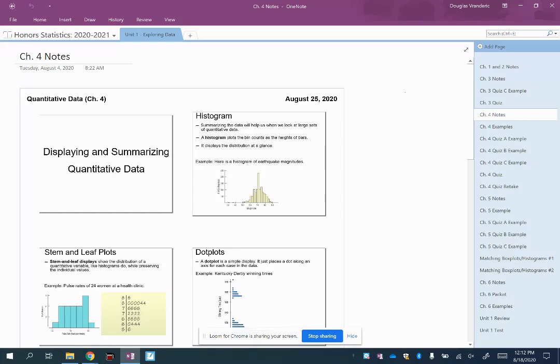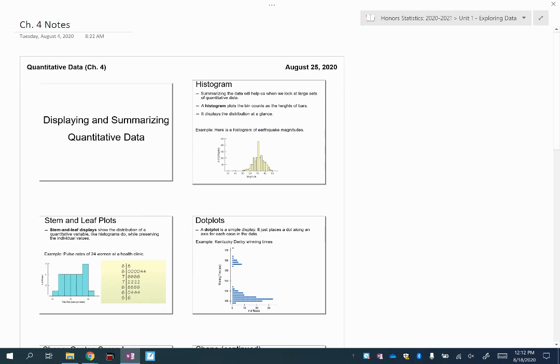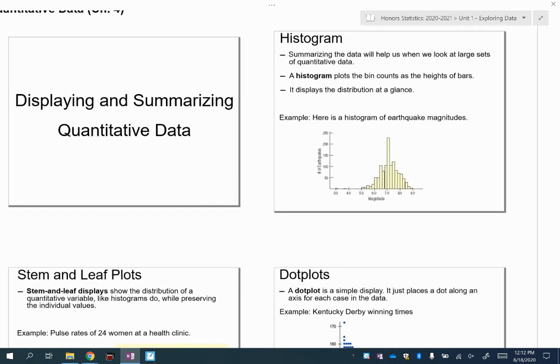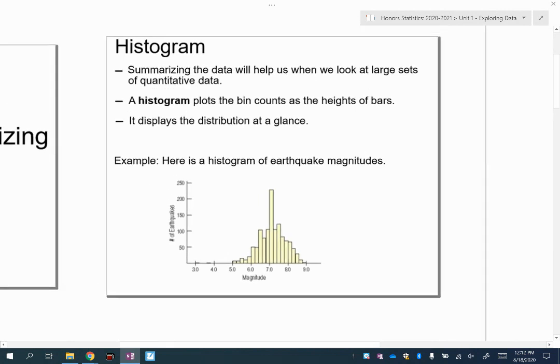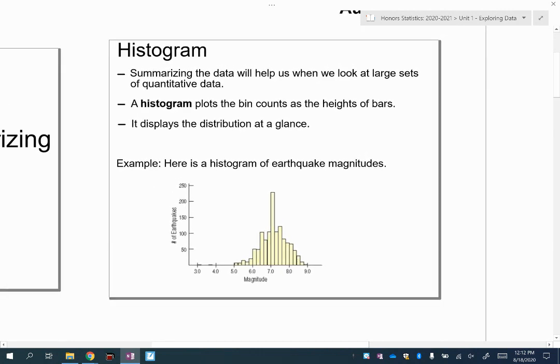We're going to talk today about the chapter 4 material, which is displaying and summarizing quantitative data. Hopefully you've had a chance to read the textbook that goes into all this stuff, and this is just a quick summary of what is in there. These notes are much longer than the last couple of chapters. There's a lot going on in chapter 4 as we move into quantitative variables.